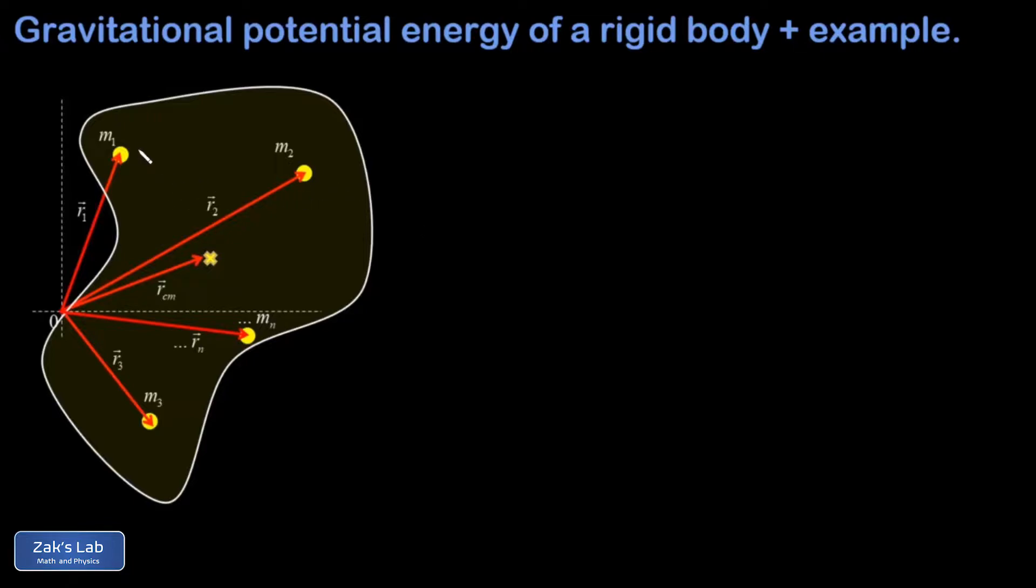As we've shown in the diagram, that's m1, m2, m3, all the way to some mn where n is the total number of particles that we broke it into. In addition we've shown the center of mass position vector pointing from the origin to the center of mass of the rigid body.